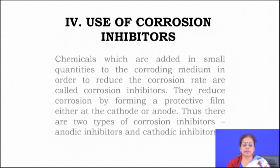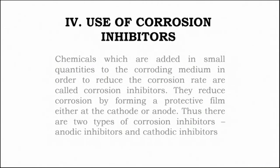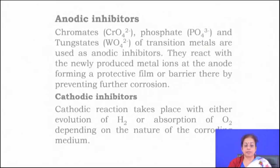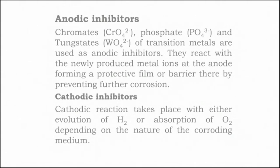Corrosion inhibitors are chemical substances added in small quantities to the corroding media to reduce the corrosion rate. They reduce corrosion by forming a protective film either at the cathode or anode. There are two types: cathodic inhibitors and anodic inhibitors, or mixed inhibitors. Anodic inhibitors — such as chromates, phosphates, and tungstates — react with the metal surface and form a protective barrier film that prevents further corrosion.